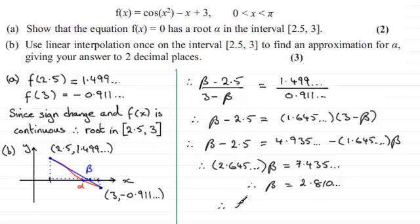And then if I divide both sides by 2.645, I end up with 2.810 and so on. So therefore that root α is approximately the same as β, which is 2.81 to two decimal places. All right.